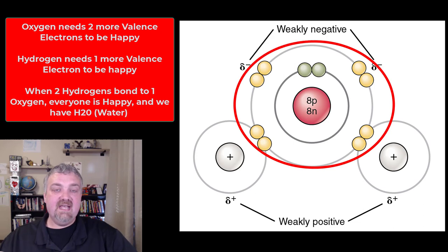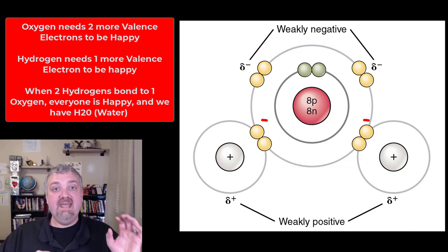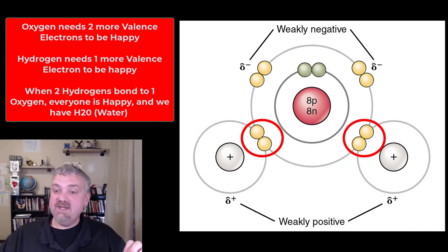But one way that oxygen can be happy and two hydrogens can be happy is if they share electrons. So now you see that oxygen has all eight electrons it needs to satisfy the octet rule and be stable. But to do so, it had to share an electron with one hydrogen and share an electron with another hydrogen, which is why oxygen forms H2O.